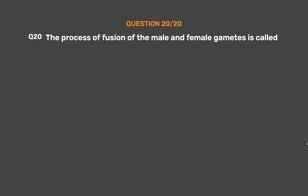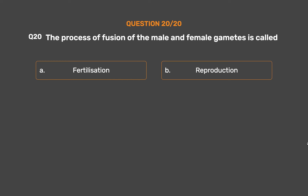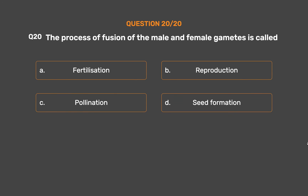Question No. 20. The process of fusion of the male and female gametes is called: Option A – Fertilization. Option B – Reproduction. Option C – Pollination. Option D – Seed formation.